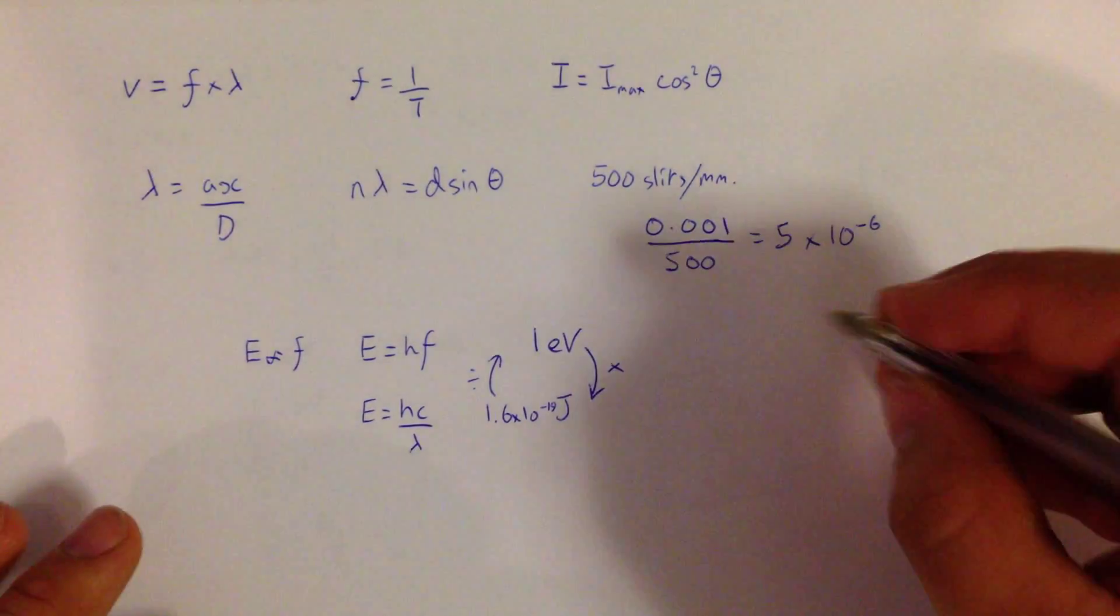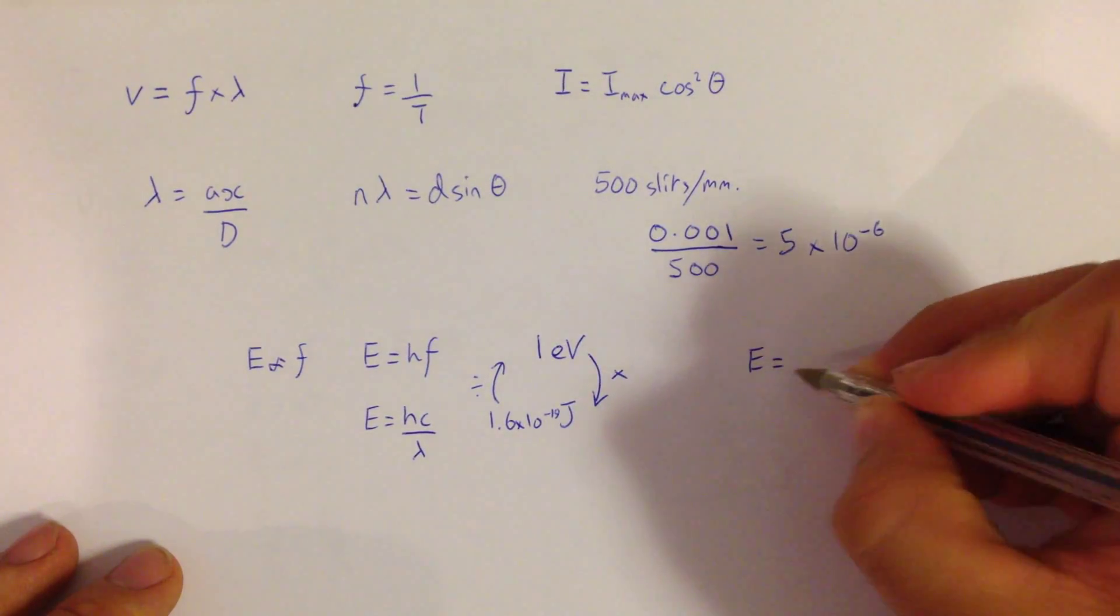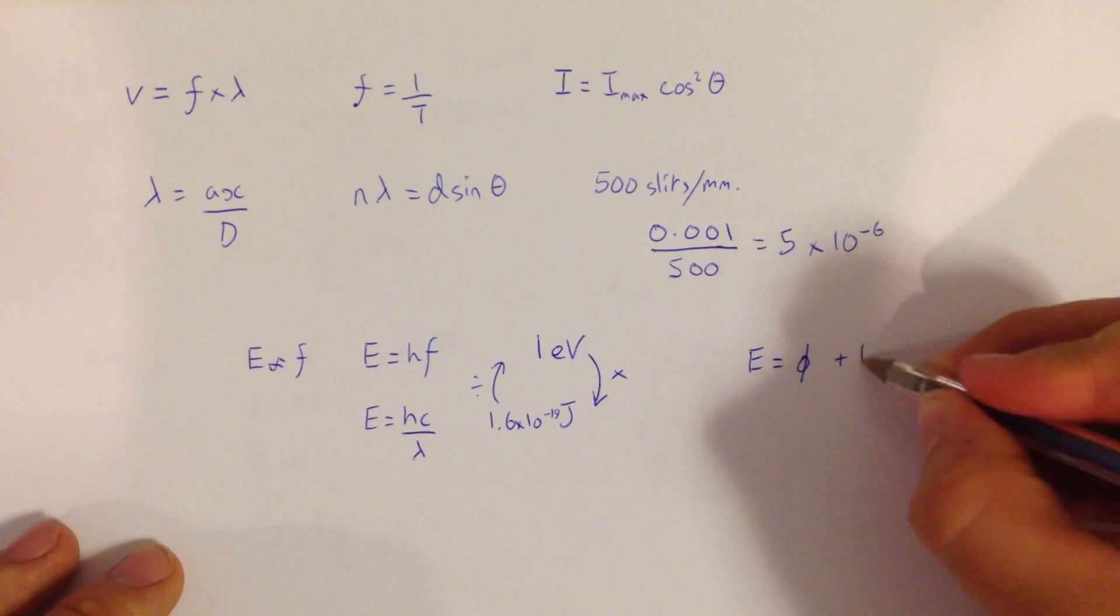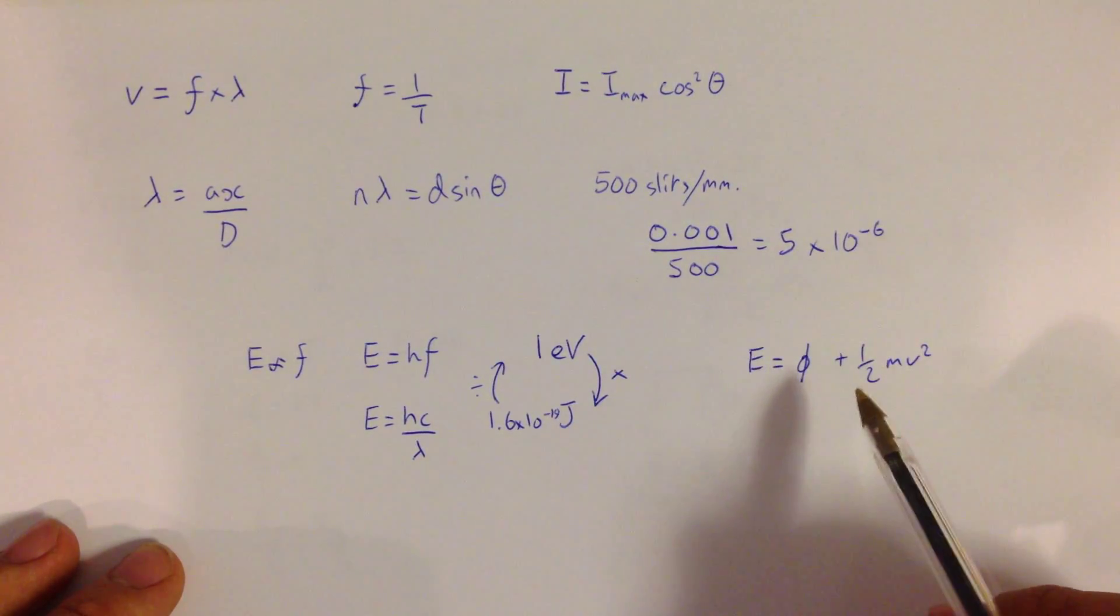We then have the equation for the photoelectric effect, which is that E, which can be equal to HF, and HC over lambda, is equal to phi, which is the work function, plus half mv squared, which is the maximum kinetic energy. Remember if you're rearranging this equation, remember it's a plus, so you have to take away first.